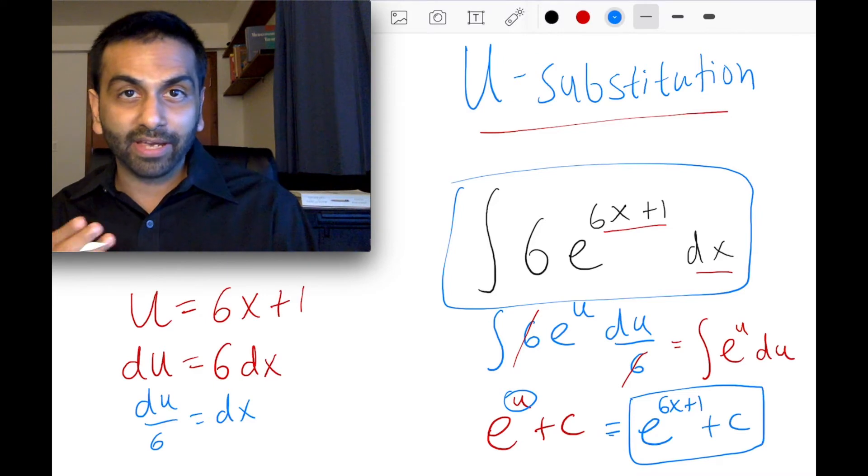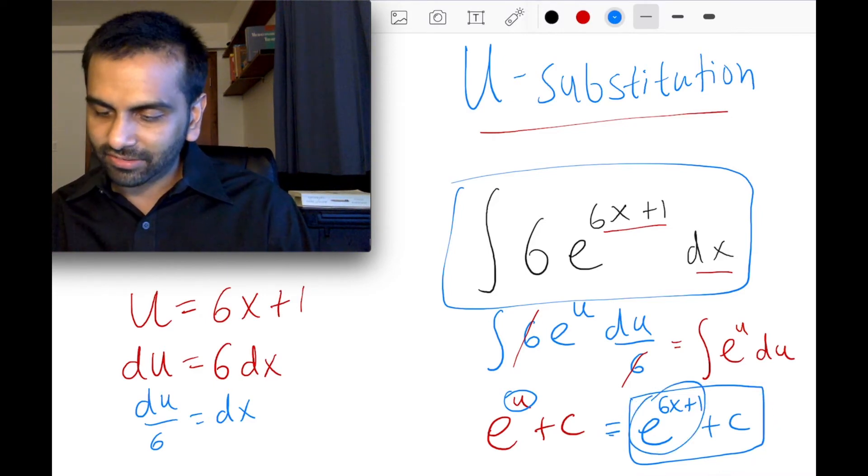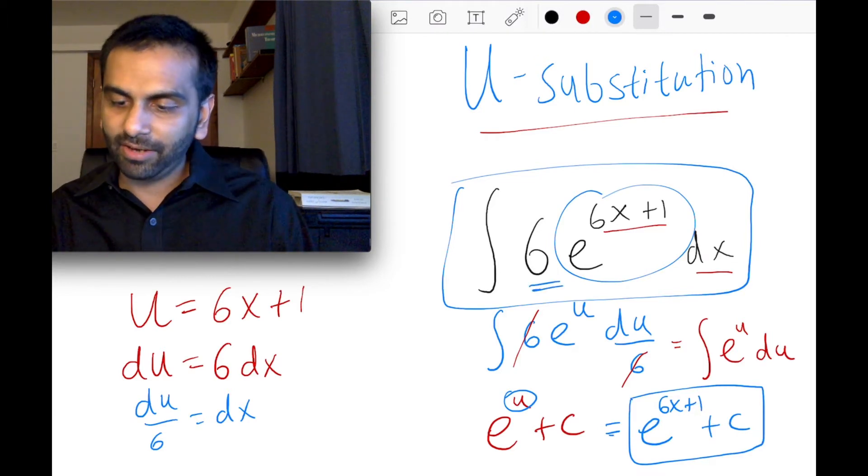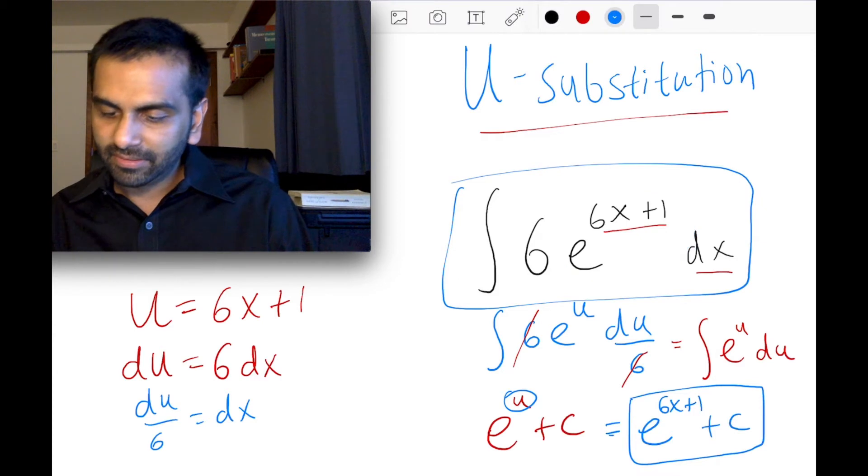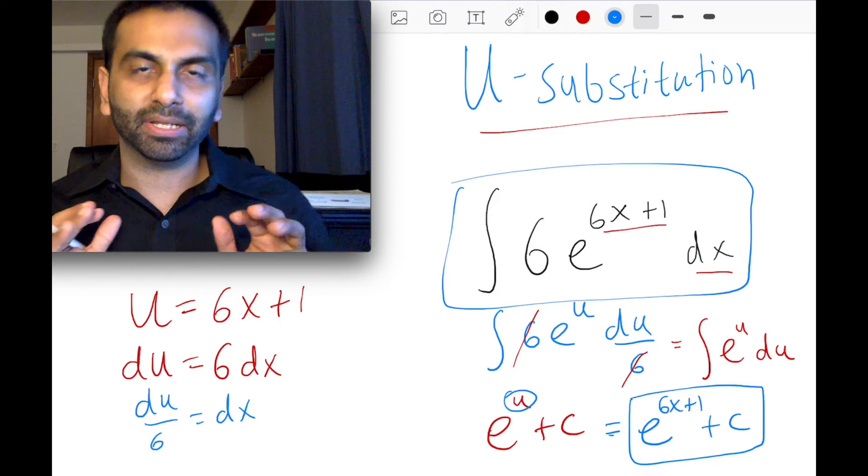And again, you can always verify your answer. Take the derivative of this, the derivative of e to the anything is just that same thing, e to the 6x plus 1, times the derivative of the exponent, the derivative of 6x plus 1 is just 6. So that's why that gets multiplied out. So the derivative is, in fact, this guy, 6 times e to the 6x plus 1. So that's like a basic example of it.